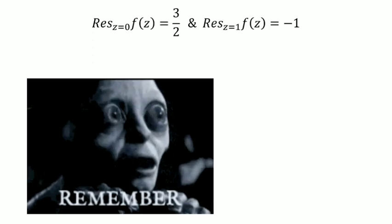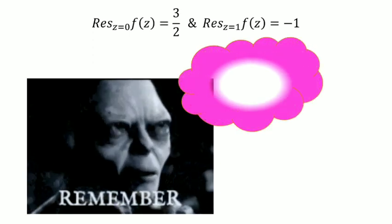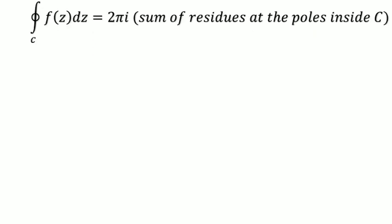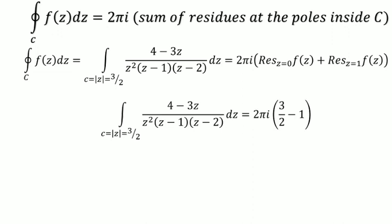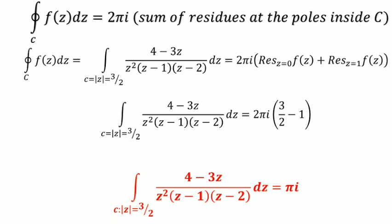Now applying Cauchy's residue theorem: the integral over C of f(z) dz equals 2πi times the sum of residues at poles inside C, which is 2πi times (3/2 minus 1), equals 2πi times 1/2, giving a final answer of πi. This is how we solve complex integrations using Cauchy's residue theorem.